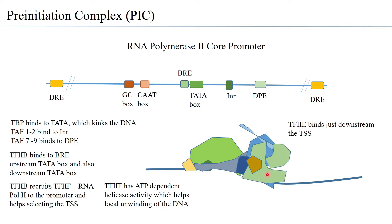TF2H has three important domains. First is XPD and XPB — both have inherent ATPase activity as well as helicase activity. TF2H also has a kinase-3 region, which is responsible for phosphorylating RNA polymerase 2 at the alpha CTD tail and some other components of RNA polymerase 2.